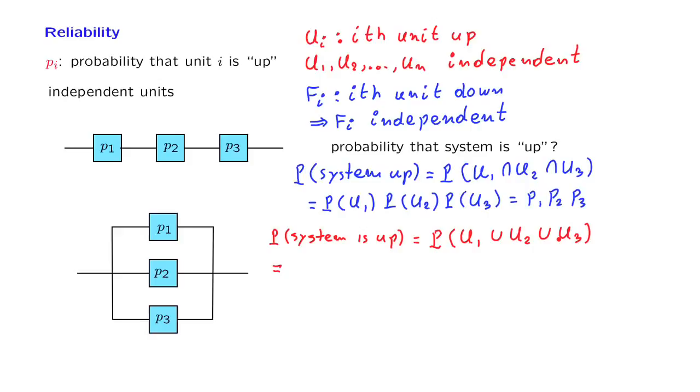Instead of using formally De Morgan's laws, let's just argue directly. Let us look at this event: that unit 1 fails, and unit 2 fails, and unit 3 fails. What is the relation between this event and the event that we have here? They are complements.